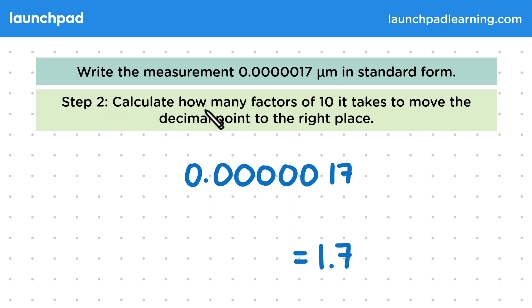Step 2, calculate how many factors of 10 it takes to move the decimal point to the right place. We can do this simply by counting out how many places the decimal point has to jump to make 1.7. In this case, it's 6 spaces. So this number in standard form will be 1.7 times 10 to the minus 6 micrometers.